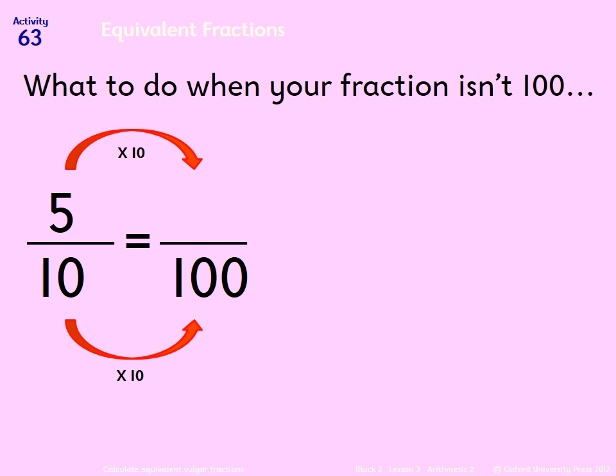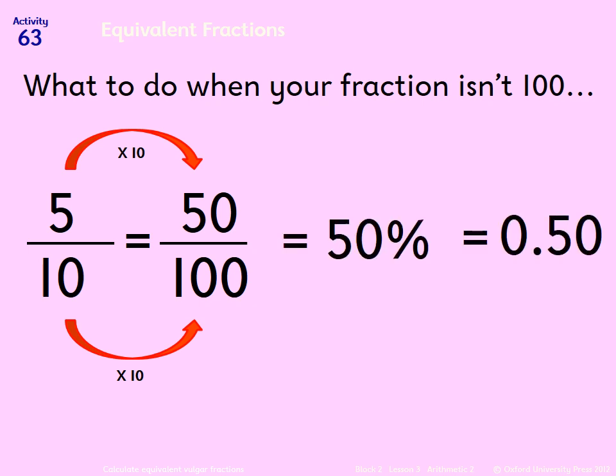We times the top by 10. So 5 tenths is exactly the same as 50 over 100, and now we can change it into a percentage and a decimal. 50 over 100 is the same as 50%, which is the same as 0.5.